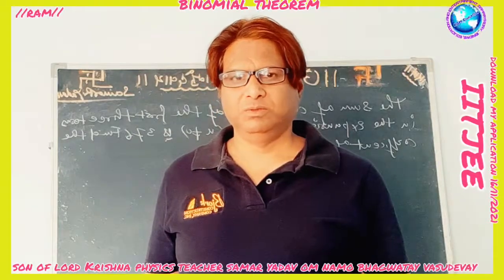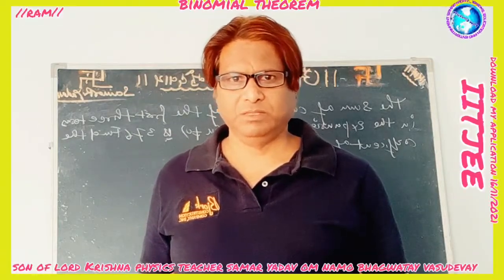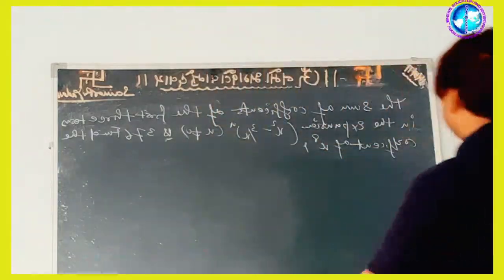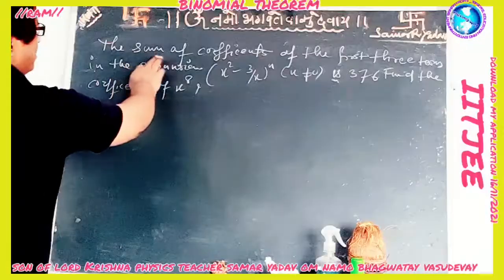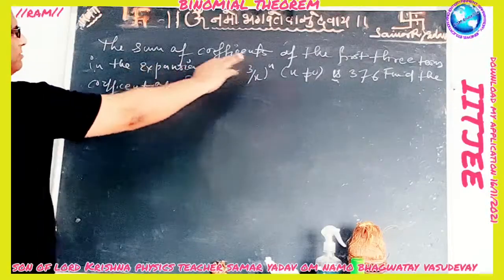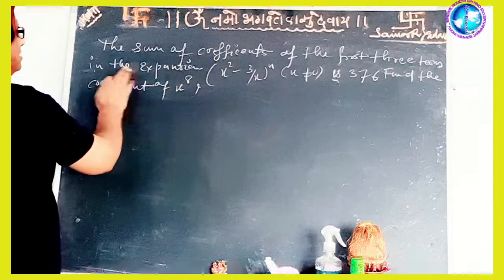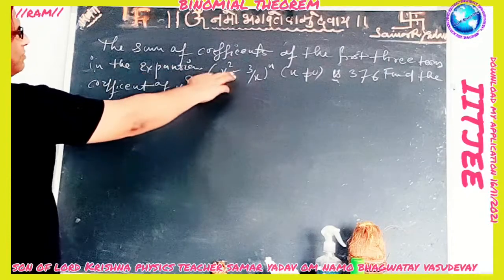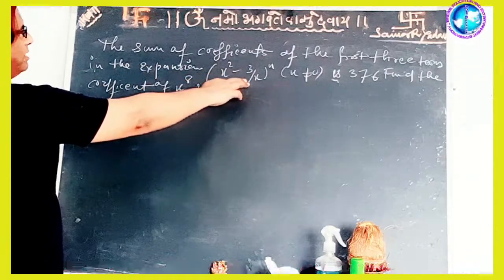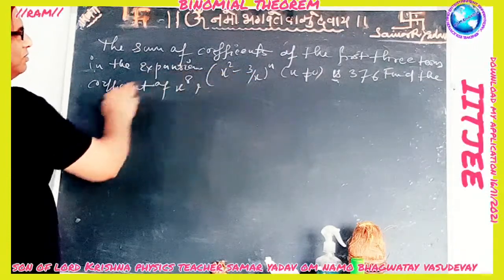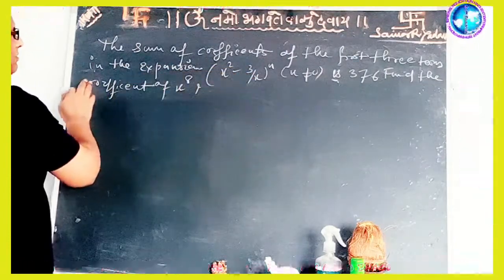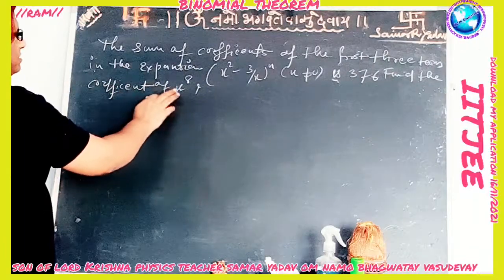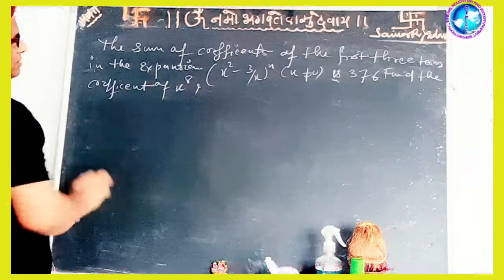Now, to solve this numerical: the sum of the coefficients of the first three terms in the expansion of (x² - 3/x)^n, where x ≠ 0, is 376. Find the coefficient of x^8.